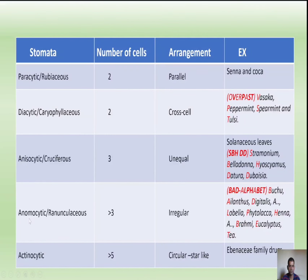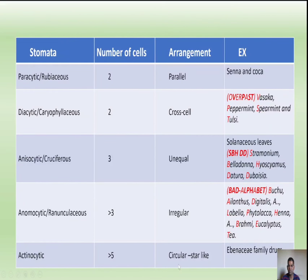Anemocytic (ranunculaceous): more than three cells arranged irregularly — examples Buchu, Ailanthus, Digitalis, Lobelia, Phytolacca, Henna, Brahmi, Eucalyptus. Actinocytic: more than five cells arranged in a circular or star-like arrangement — found in the Ebenaceae family.